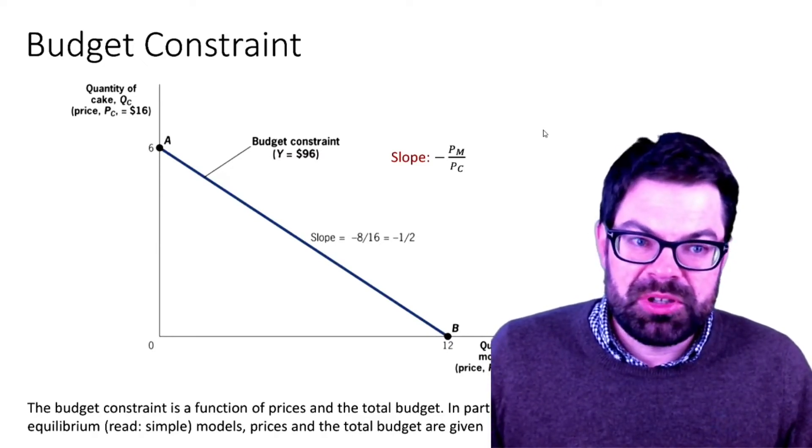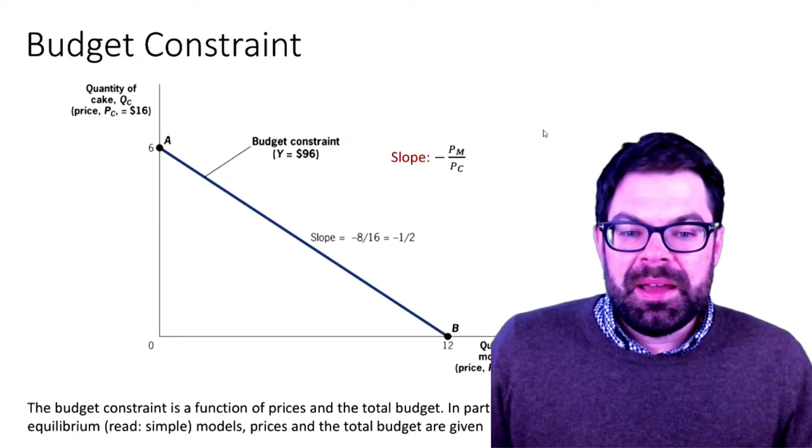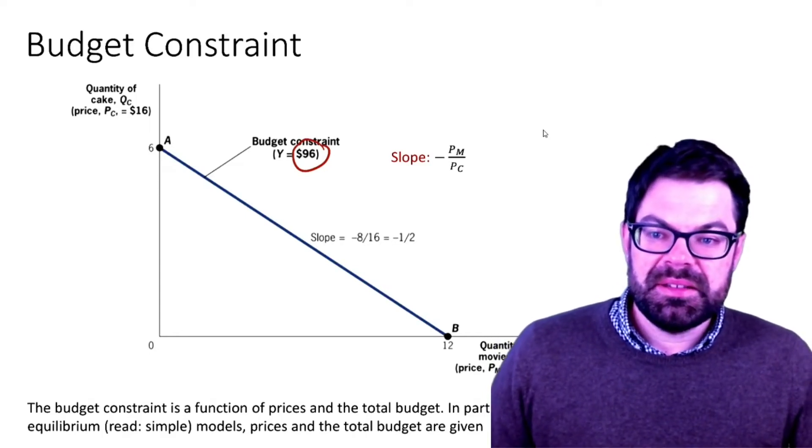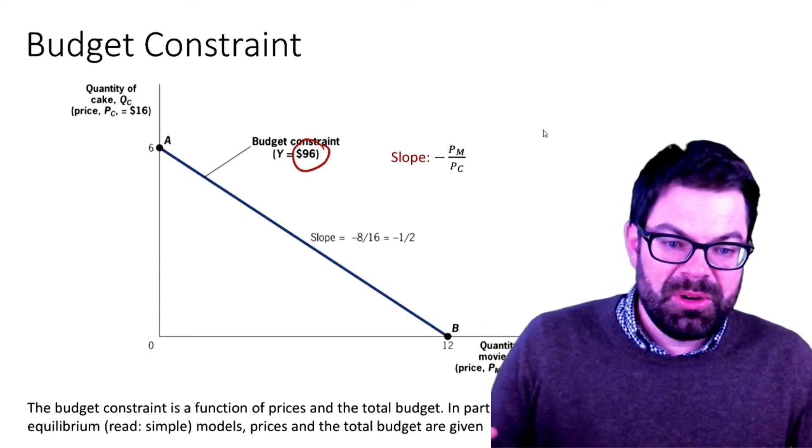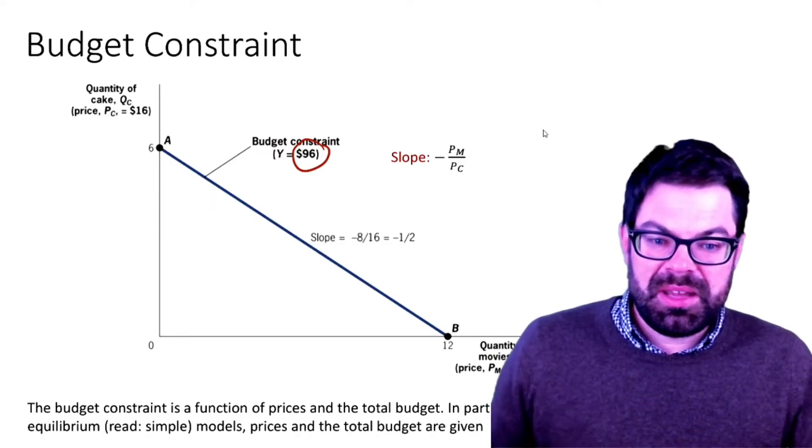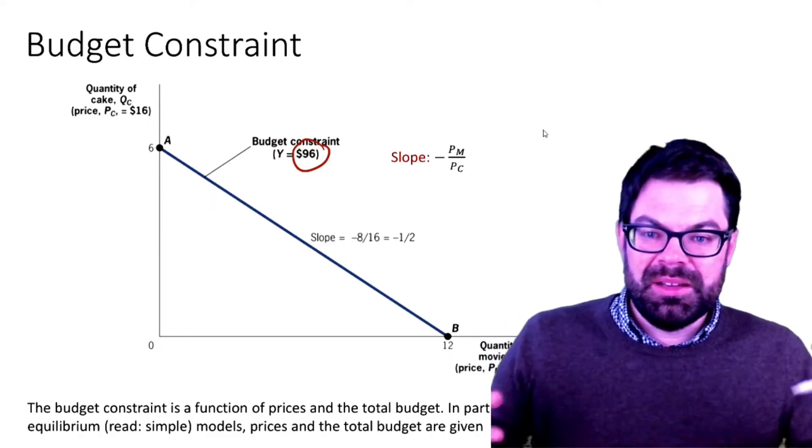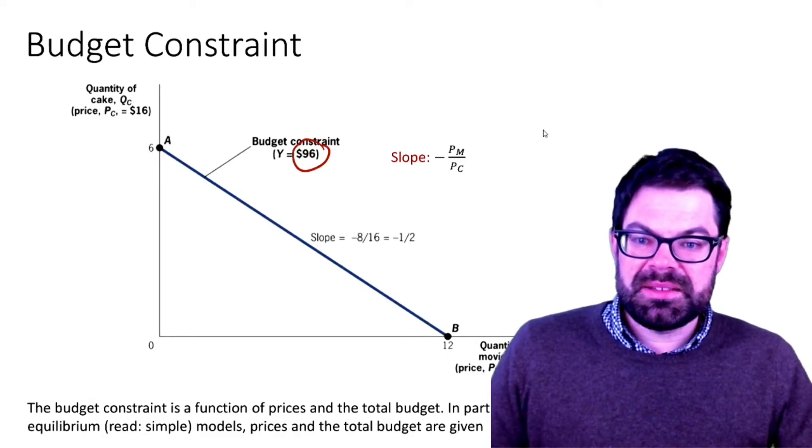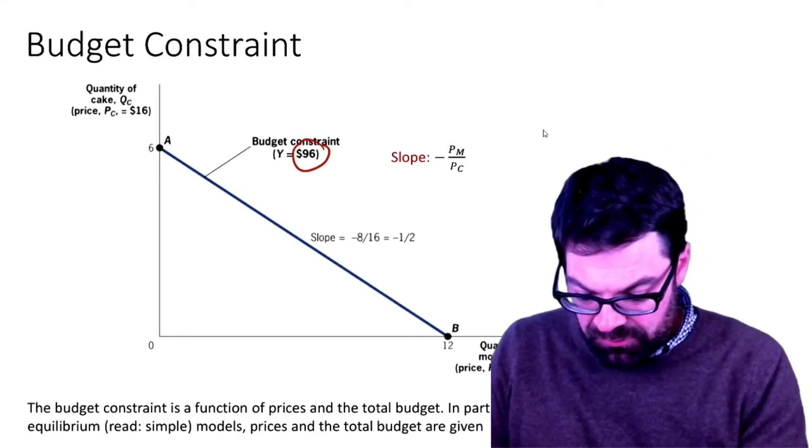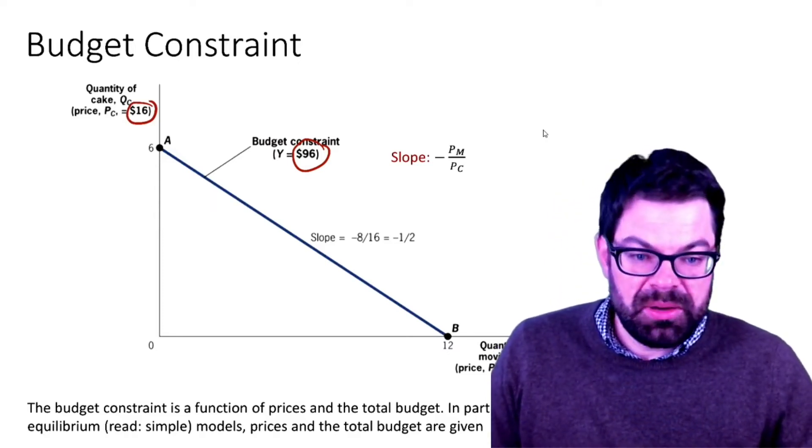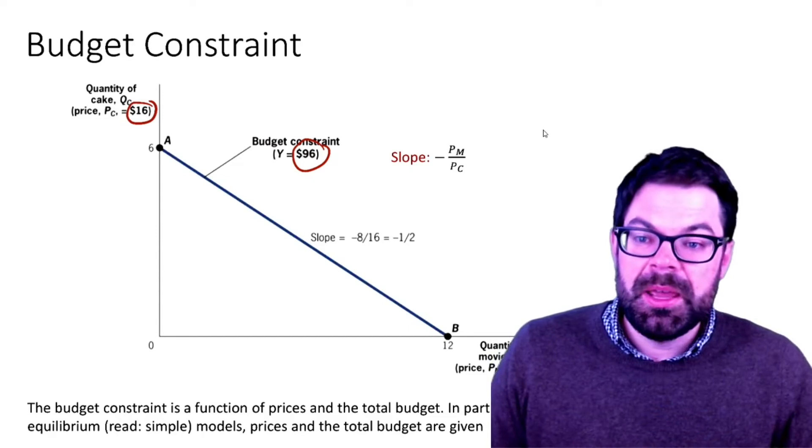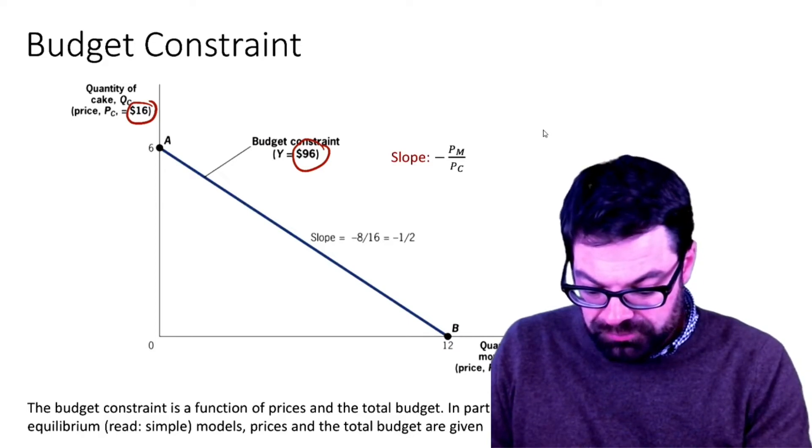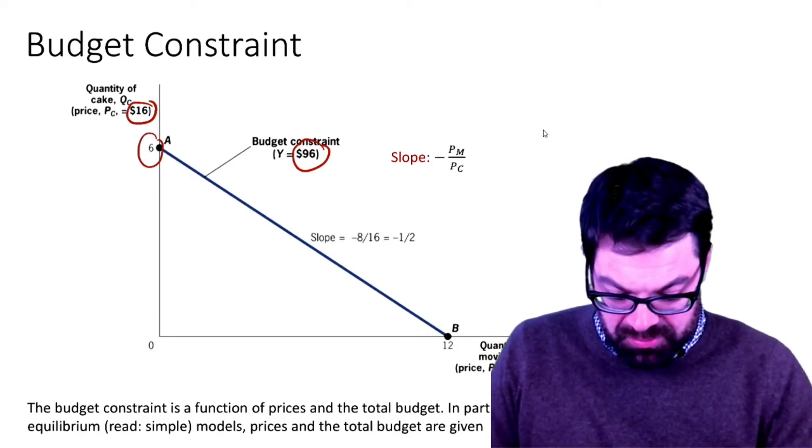This is from Gruber's book. The person has a total budget of $96 and they can spend that either on cake or on movies, or on a combination of both. The price for a cake is $16 whereas the price for a movie ticket is $8.